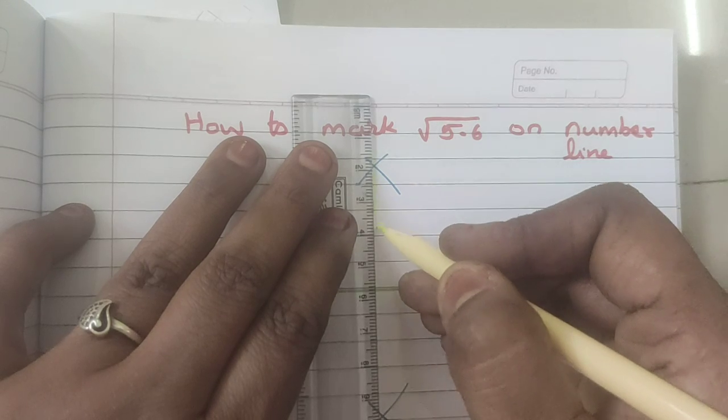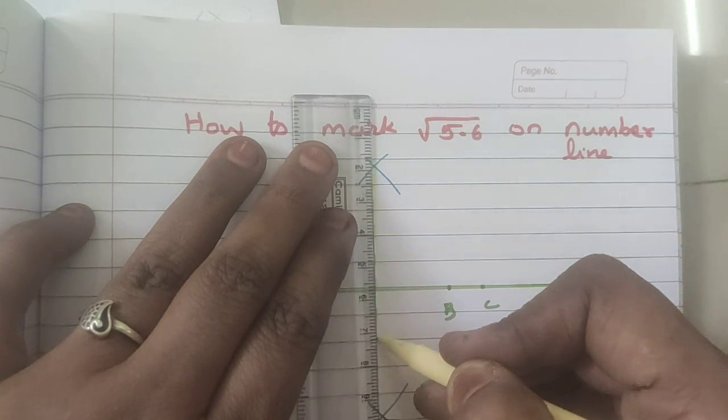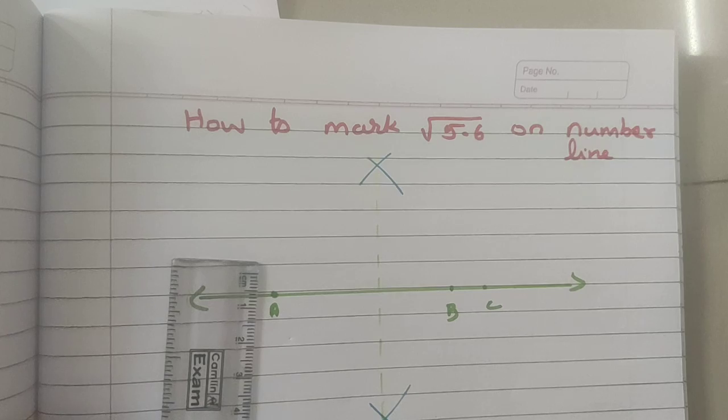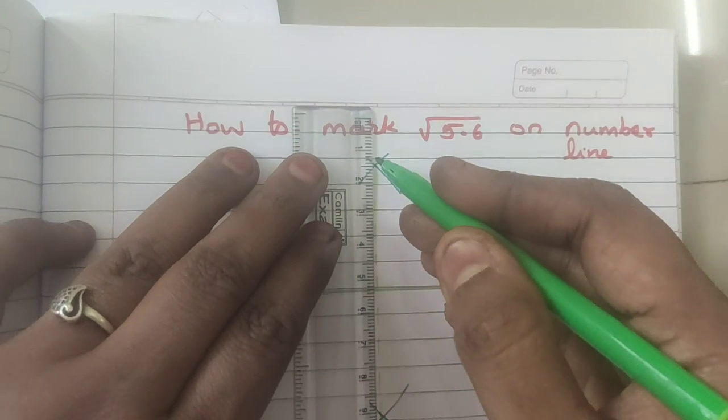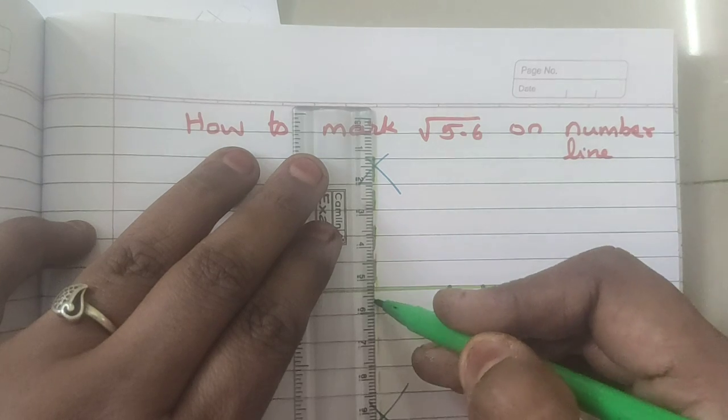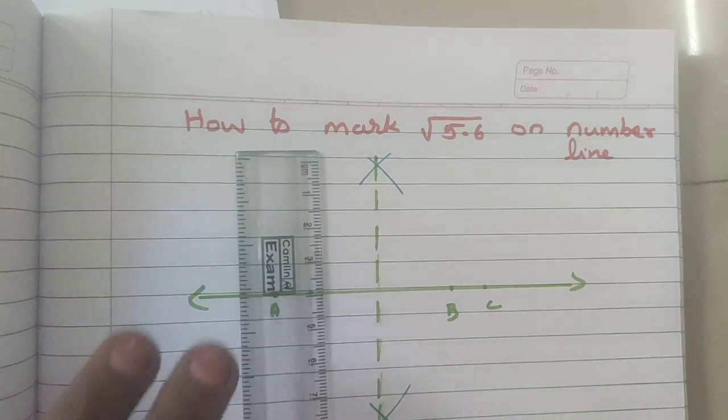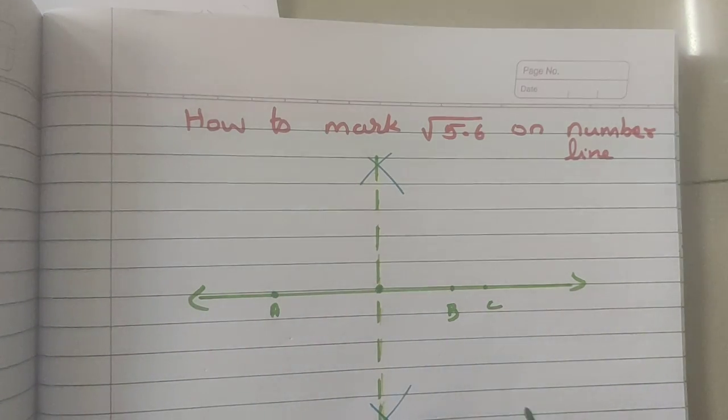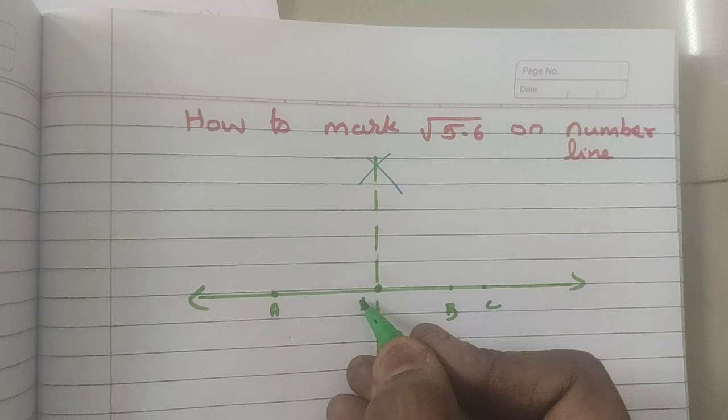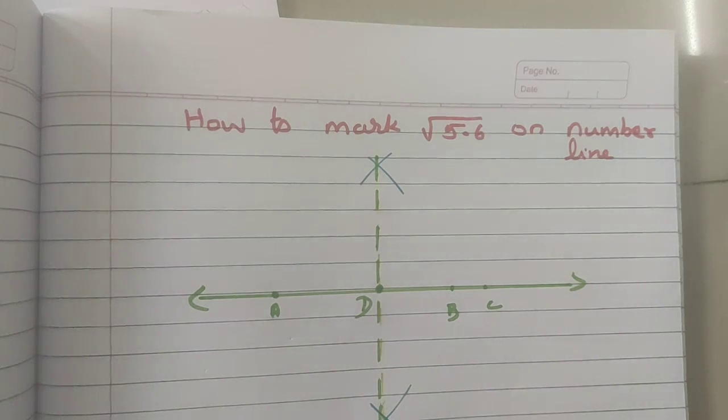Now, bisecting A and C. So, mark a dotted line. Are you able to see? Let me draw with the dark ink. This is the centre of A and C. Let me take it as D.